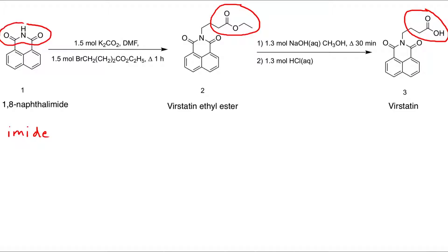Whenever we synthesize our products, we want to verify that we do in fact have our target compounds at each stage of the synthesis. We can do that by characterizing what we synthesize through the use of IR spectroscopy, proton NMR spectroscopy, carbon-13 NMR spectroscopy, and so forth. Today, we will be using proton NMR spectroscopy to characterize our molecules.